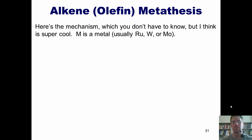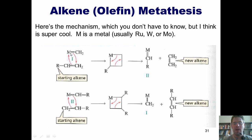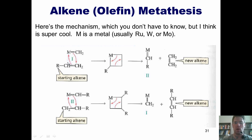Here's the mechanism for olefin metathesis, which you, my students, don't have to know, but I happen to think is really, really cool. The letter M in this mechanism represents a metal, which usually is ruthenium, tungsten, or molybdenum. I've got a metal double bonded to a carbon that interacts with my alkene and does this type of electron rearrangement to form a four-membered ring. A subsequent electron rearrangement forms a double bond from what was the internal carbon in my alkene to the metal itself. This also forms a double bond between what was the external carbon in my original alkene and the CH2 that was originally bonded to the metal, releasing it as ethane gas.